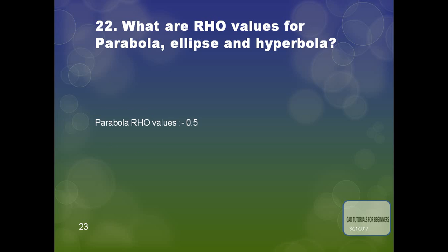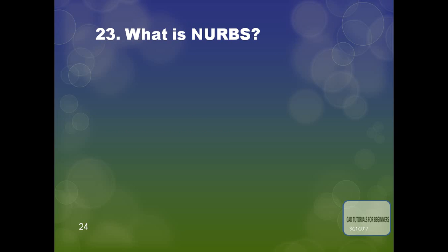The next question is: what are the rho values for parabola, ellipse, and hyperbola? For parabola the rho value is 0.5; for ellipse it lies between 0 and 0.5; and for hyperbola it lies between 0.5 and 1. The next question is: what are NURBS? NURBS are basically types of curves.